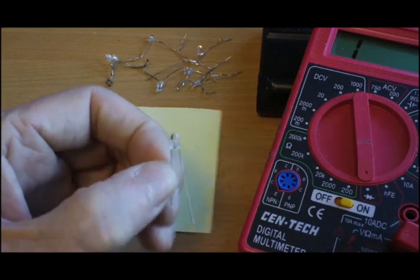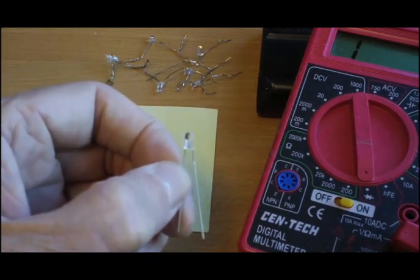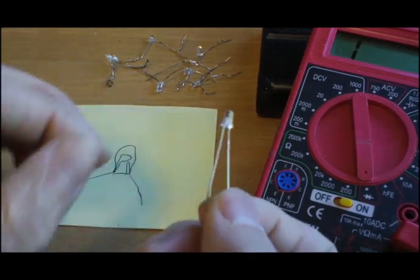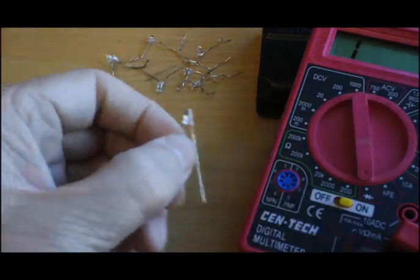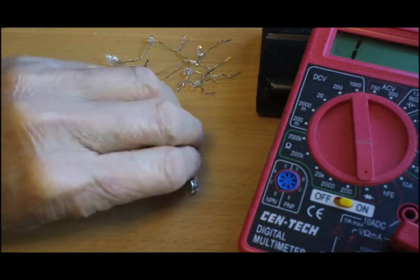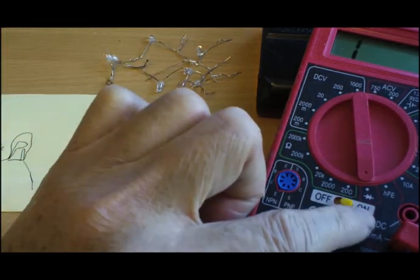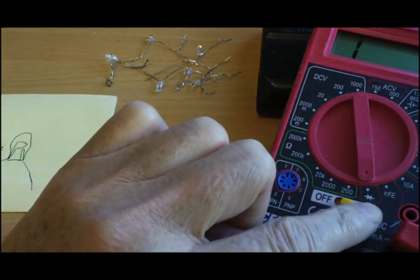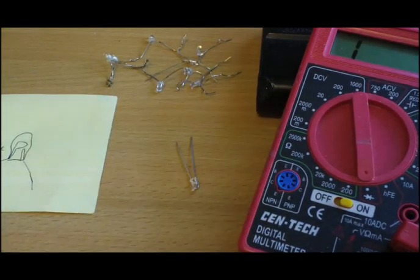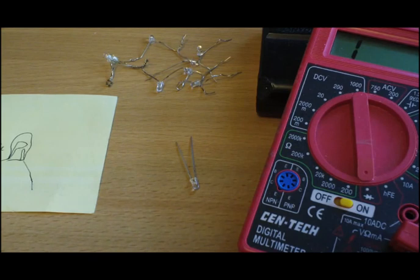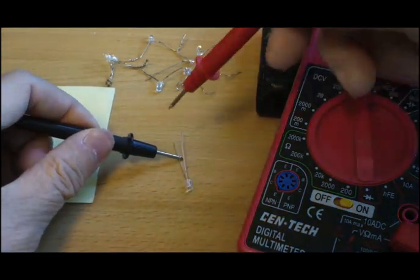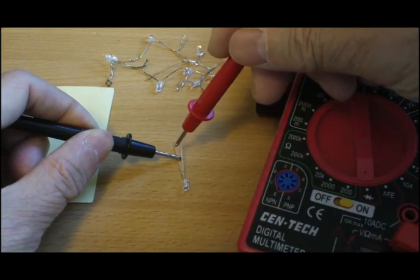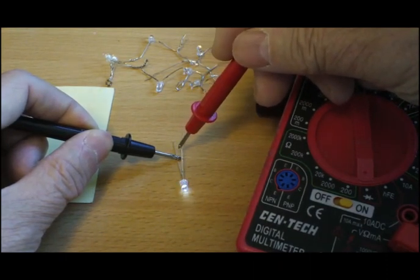So to see if they're still good, the easiest way is to connect it to a 3-volt or so power source. Or you can use a meter like this. Just set your meter to the diode checking function and connect your negative to the negative probe and the positive to the positive.